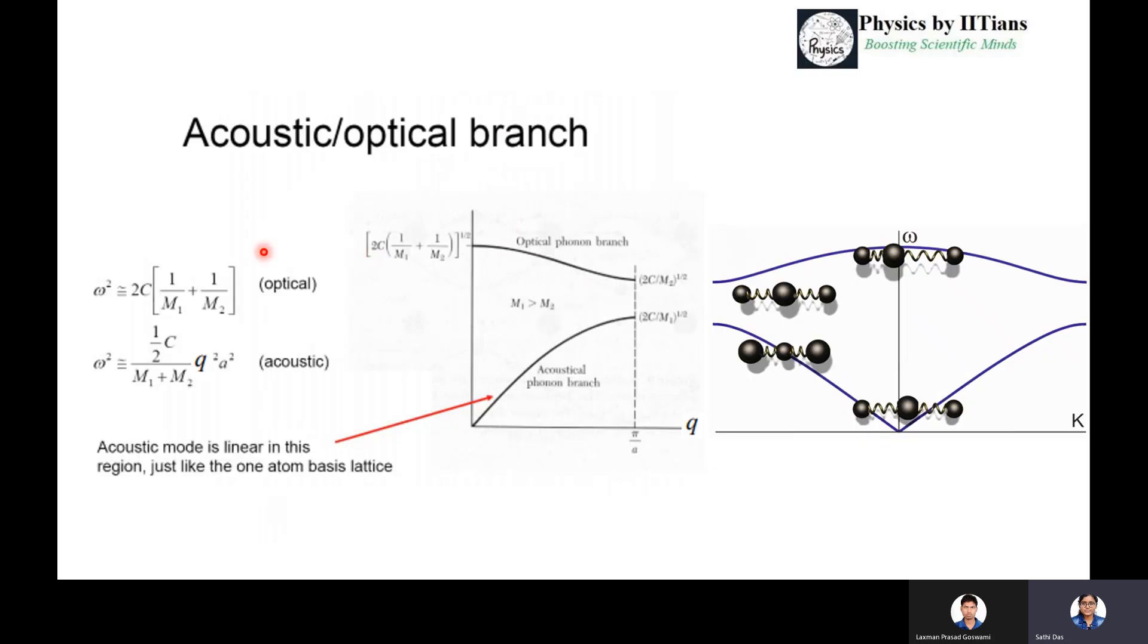If you want to plot this optical phonon branch and acoustical phonon branch, you can express it as ω² equals 2C(1/M1 + 1/M2) at maximum value, and for the acoustic it will be ω² equals C/2(1/M1 + 1/M2)Q²A². The acoustic mode is linear kind of thing in this region, just like one atom basis lattice. This is a schematic representation of understanding how lattice atoms are moving.